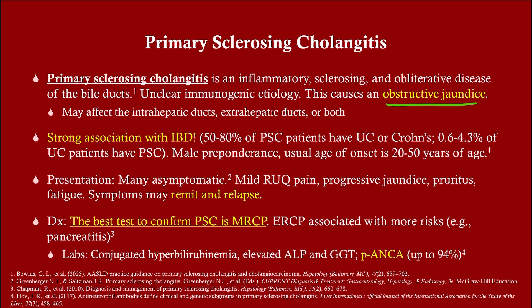The diagnosis is MRCP. Why do we do MRCP and not ERCP? Because there's inflammation, and wherever there's inflammation the structure is weaker. We do not want to inject stuff into a duct when we don't know how weak it is, because we can cause perforation. So we do MRCP — it's safer and you can make the diagnosis that way.